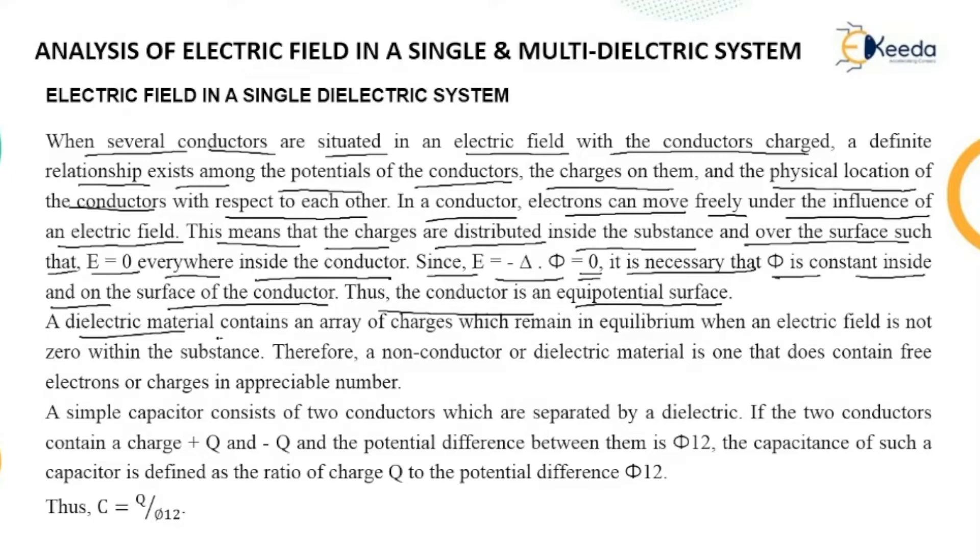Thus, the conductor is an equipotential surface. Equipotential means the potential is equal or the same. A dielectric material contains an array of charges which remain in equilibrium when an electric field is not zero within the substance. Therefore, a non-conductor or dielectric material is one that does not contain free electrons or charges in appreciable number.